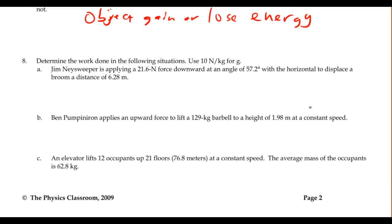Okay, we're just going to solve these three problems using the concepts of work. We're going to use 10 N per kilogram for g. Jim Nasweeper there is applying a 21.6 N force downward at an angle of 57.2 degrees with the horizontal. So this is 57.2. It's going to displace the broom. Now I'm going to assume the broom is going to move across the level surface at 0 degrees. And that's going to be a distance of 6.28 meters.